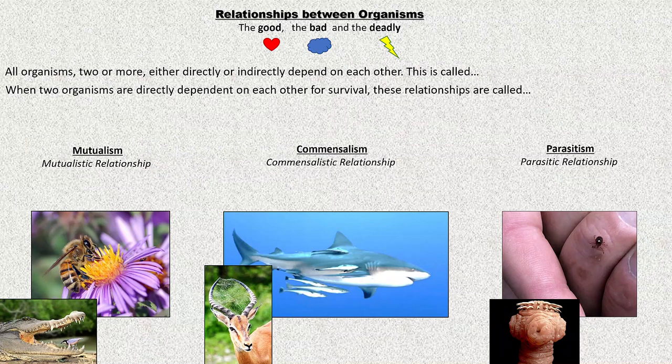There are a lot of relationships that go on in nature — some good, some bad, and some deadly ones. Nonetheless, all organisms, two or more, either directly or indirectly, depend on each other. This is called interdependence. When two organisms directly depend on each other for each other's survival, those specific relationships are called symbiotic relationships, and there are three types of them.